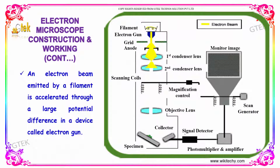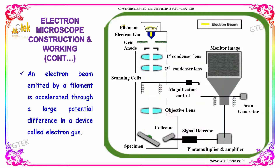An electron beam is emitted from the filament and is accelerated through a large potential difference in a device called an electron gun.